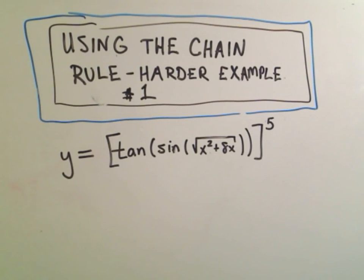Okay, in this video I just want to do a harder example using the chain rule, because I know the chain rule is a pretty confusing rule. So in this one we're going to do tangent of sine of the square root of the quantity x squared plus 8x, all of that raised to the fifth power.